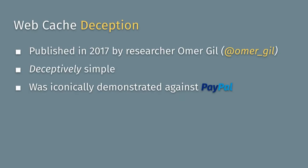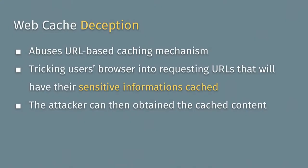Let's talk about our first exploitation technique: web cache deception, published in 2017 by security researcher Omer Gill. He demonstrated it on PayPal. His attack was deceptively simple, and at first publication many people didn't really understand the impact. When you take a step back and combine it with other bugs, you can achieve very high impact. Web cache deception is simply abusing URL-based caching to get sensitive information cached, which is then obtainable by an attacker requesting that cache entry.